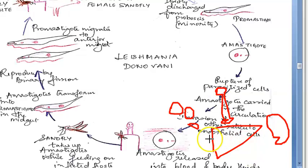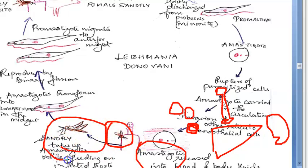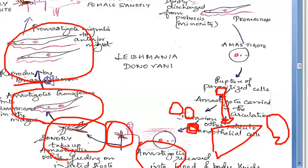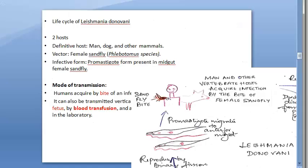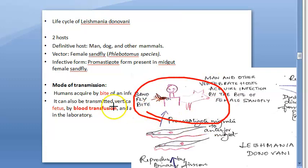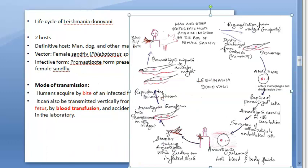When another sandfly, which is uninfected, bites this infected man, it picks up amastigotes from the blood meal. Inside the midgut of the sandfly, these amastigotes convert back into promastigotes, gain flagella, start reproducing, and there are soon many promastigotes in the sandfly. The cycle then continues as the newly infected sandfly bites another innocent person, transmitting leishmaniasis.